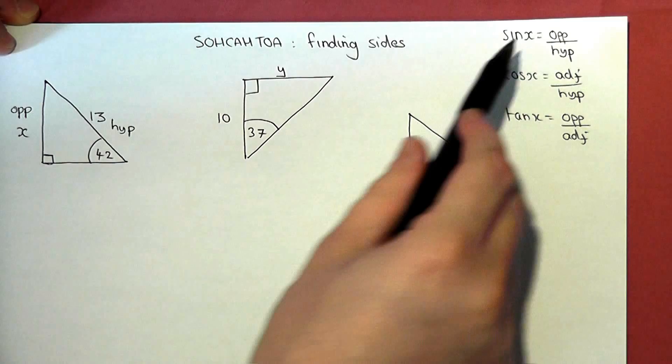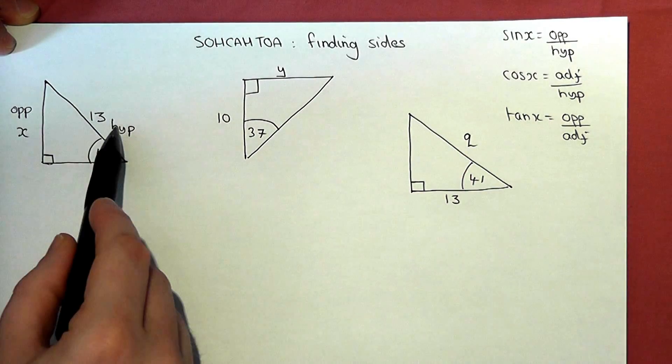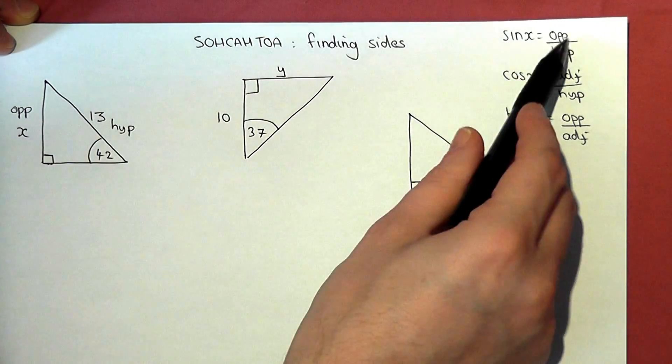And we then identify which of the equations uses opposite and hypotenuse. Well, it's the sine equation.